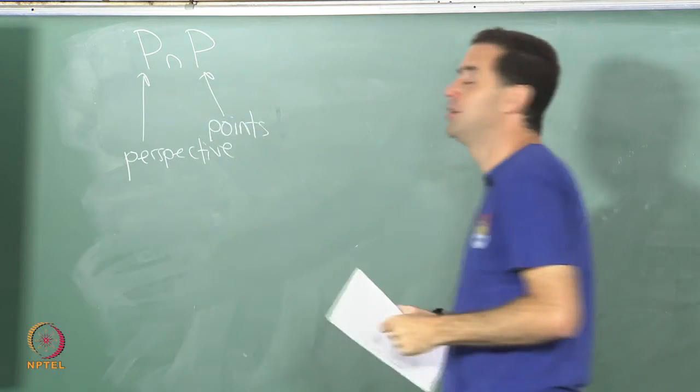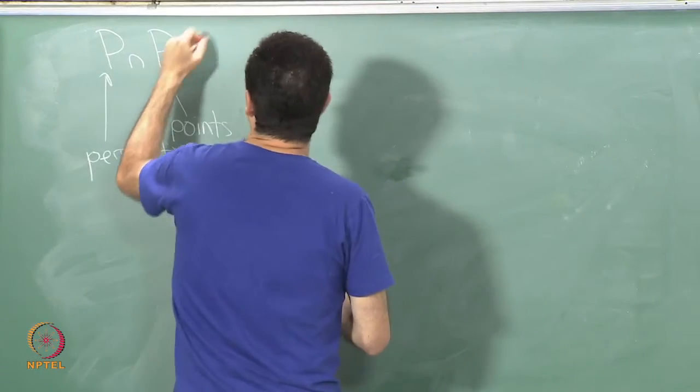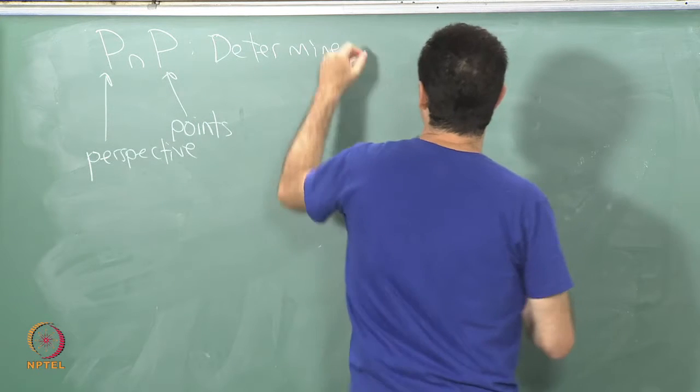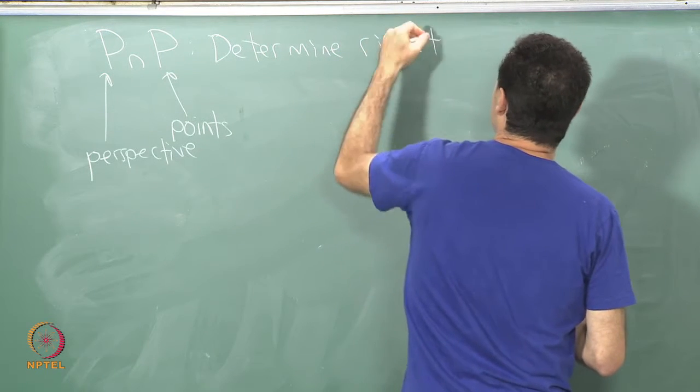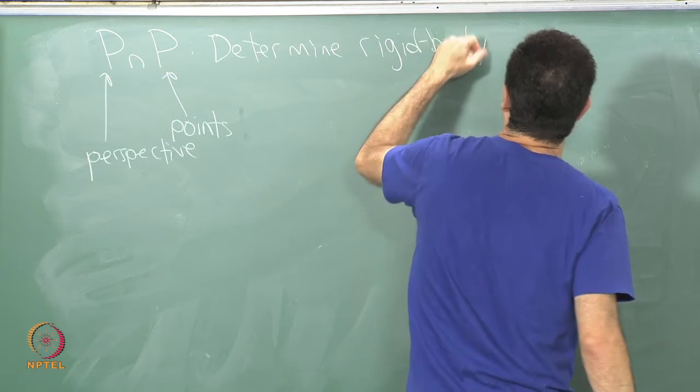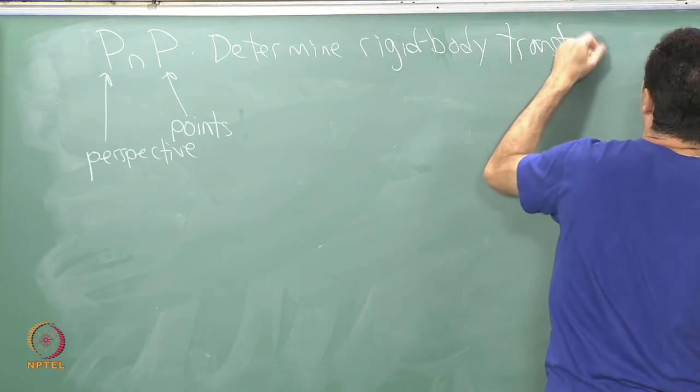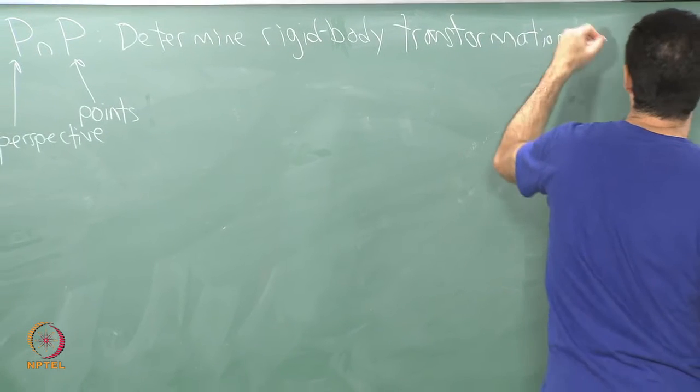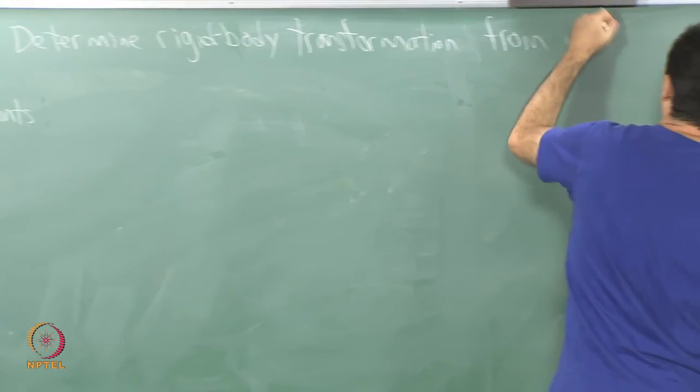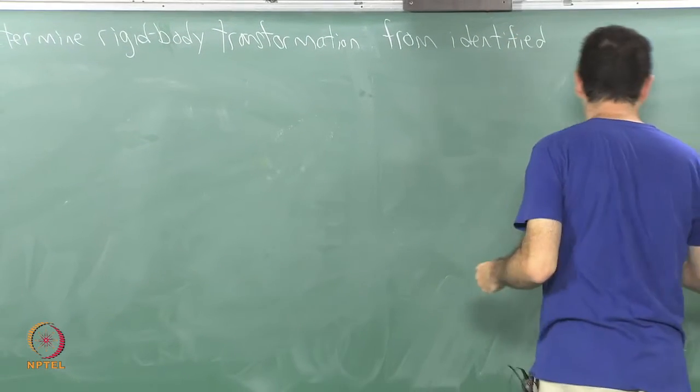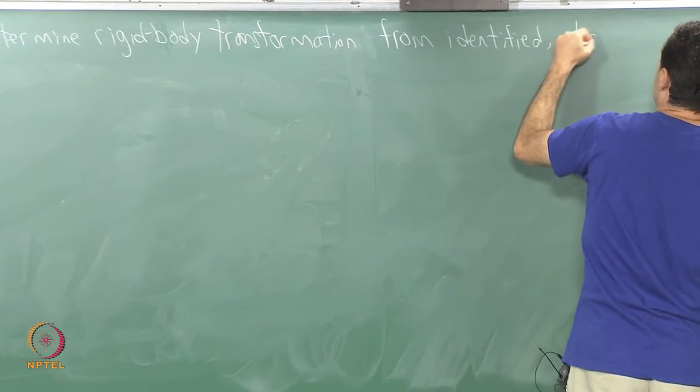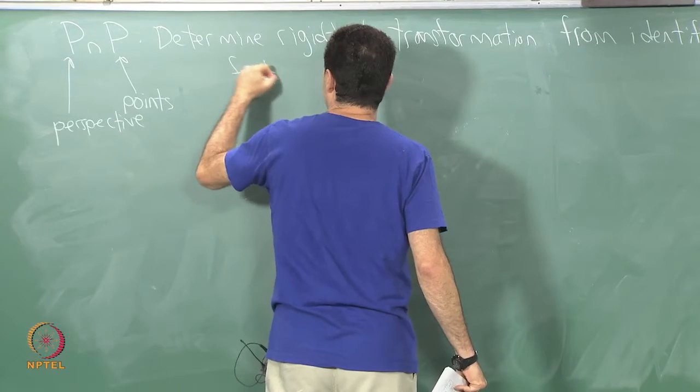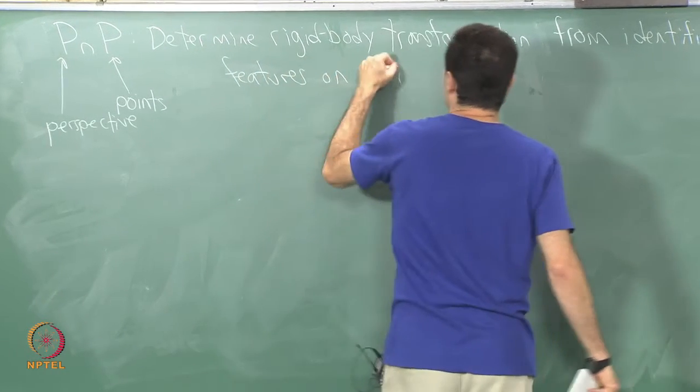The second P corresponds to points. So perspective N points problem: determine the rigid body transform from identified observed features on a rigid body.